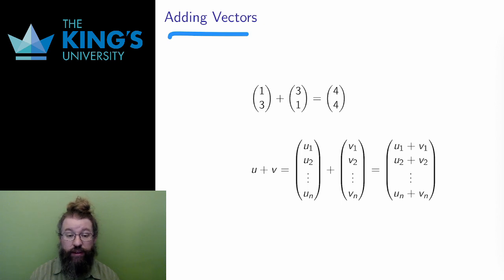Vectors can be added just by adding the components. Start in R2 with the vectors (1,3) and (3,1). To add them, I add the first components together, 1 plus 3 is 4, and then the second components together, 3 plus 1 is 4. This is a component-wise operation. Everything happens individually in each spot in the list.